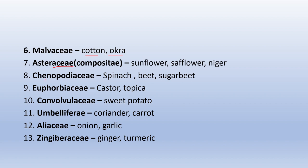The Chenopodiaceae family includes spinach, beet, and sugar beet. The Euphorbiaceae family includes castor and tapioca. The Convolvulaceae family includes sweet potato. The Umbelliferae (Apiaceae) family includes coriander and carrot. The Liliaceae family includes onion and garlic — their botanical names are Allium cepa and Allium sativum. And the Zingiberaceae family includes ginger and turmeric.